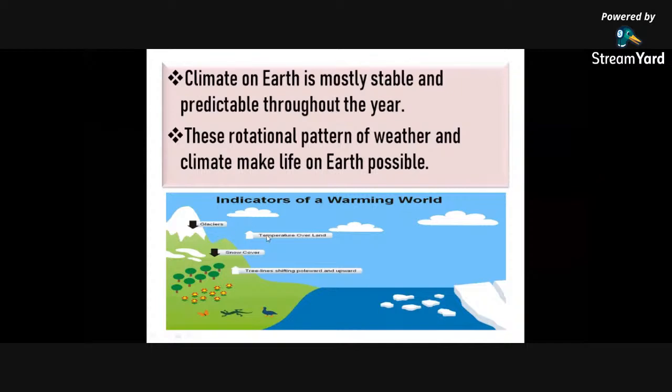Because of global warming, glaciers and snow cover tend to melt. These are the indicators that the Earth is experiencing global warming, meaning at this time it is not really stable.